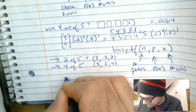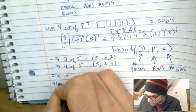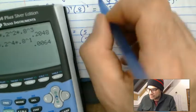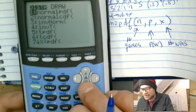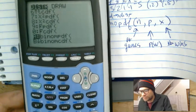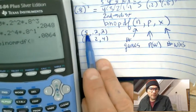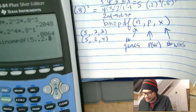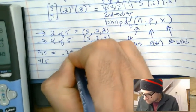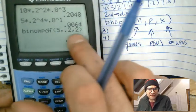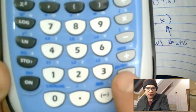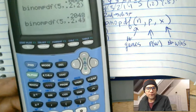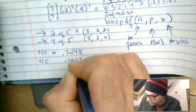Let's see what we get. For winning exactly two out of five, I go to distributions — second, distr — scroll down to binomPDF. Enter five games, probability 0.2, and exactly two wins: I get 0.2048. Using second enter to recall the last entry, I just change two wins to four wins, hit enter again, and get 0.0064 — exactly what we calculated by hand.